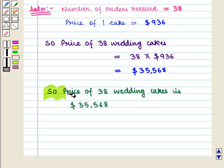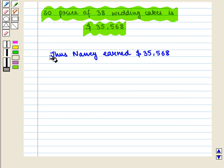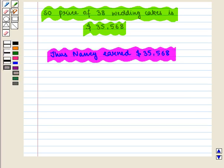So price of 38 wedding cakes is 35,568 dollars. Thus Nancy earned 35,568 dollars, which is the required answer. This completes our session. Hope you enjoyed this session.